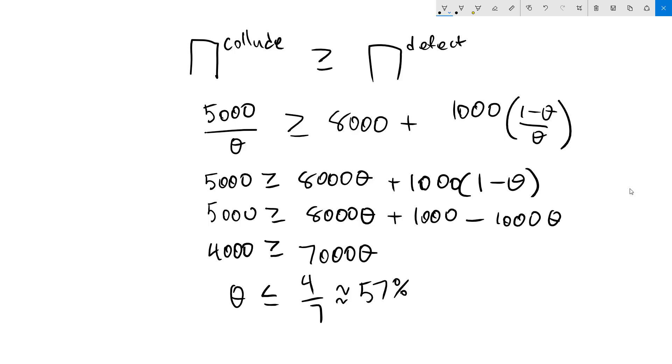Another way to say this would be that the probability of the game continuing each period needs to be greater than 3 out of 7, or about 43%.